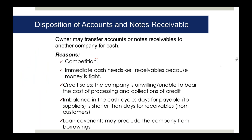Reasons for disposition include: competition requiring longer credit periods, immediate cash requirements, avoiding collection and legal costs of credit sales, and an imbalanced cash cycle. For example, if daily cash requirement is $5 million but collections are $4.5 million, there's a $500,000 daily shortfall. Receivables exist in the books but not as cash, so selling some receivables keeps the cash cycle healthy.